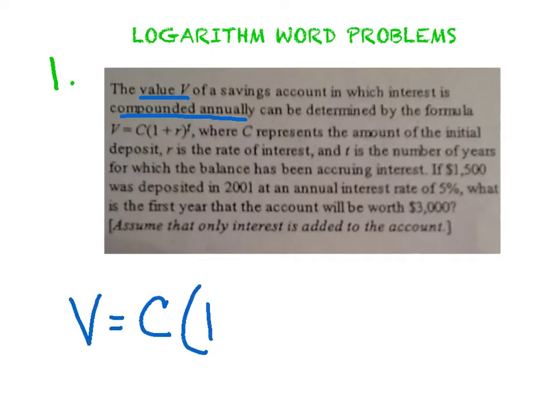V equals C quantity 1 plus R to the T. Where C represents, so again, they'll tell you what each of these letters mean. C is the initial deposit. R is the rate. And T is the number of years for which the balance has been accruing interest.